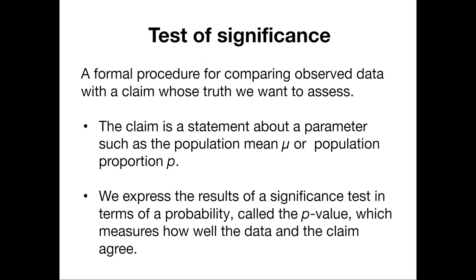We need to know these values like standard error and the mean to do tests of significance. This is a procedure for comparing observed data with some claim we know or whose truth we want to assess. So we can say that the claim is a statement about a parameter like the population mean mu or some population proportion p. And we express these results of a significant test in terms of the probability, what we call the p-value. And this p-value measures how well the data and the claim agree. We're going to do a lot of these in this class looking at the tests of significance of the different variables.